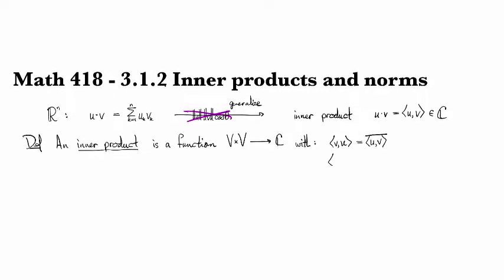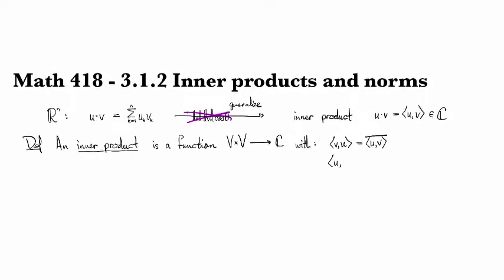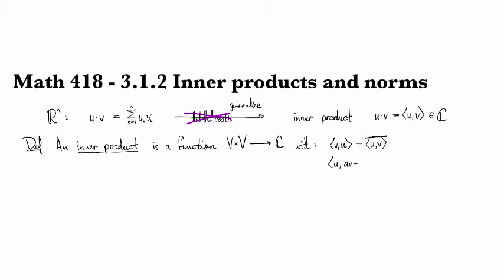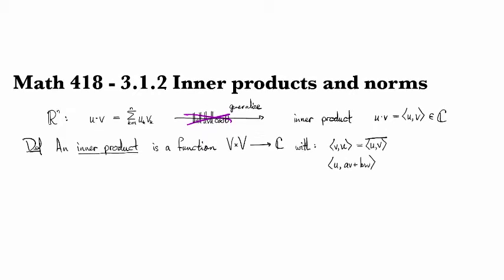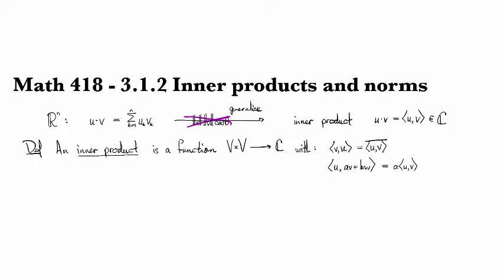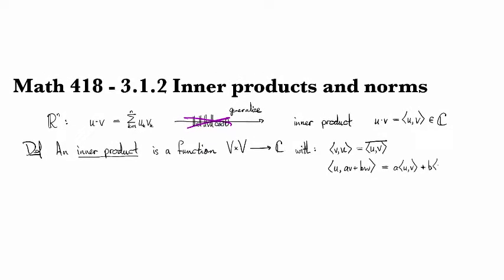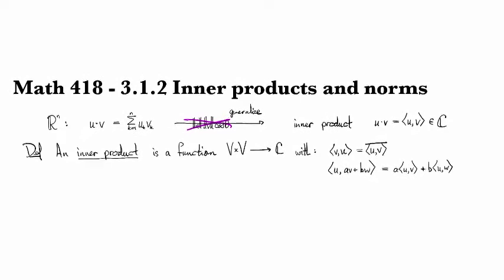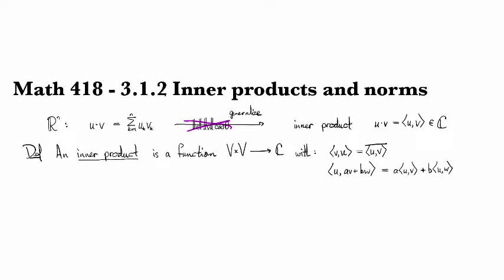It also needs to be the case that it's linear. So if you do the inner product of u with a linear combination of vectors, then this needs to be a u v plus b u w. So you can break the sum and pull out the constants.